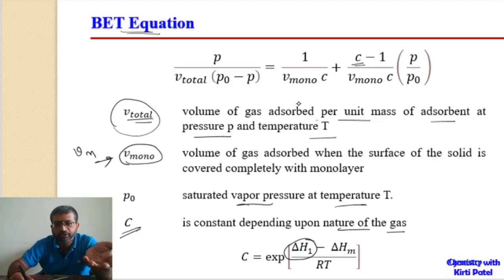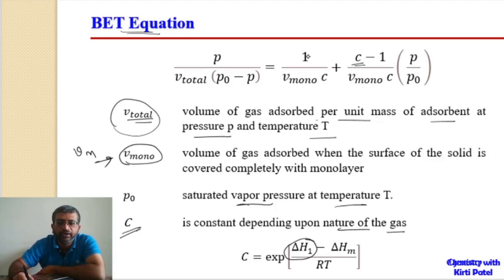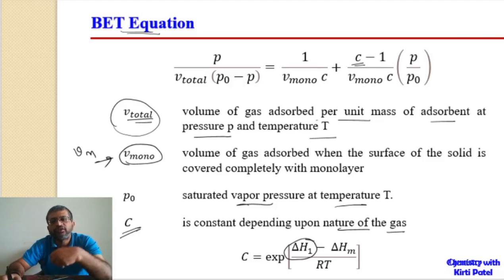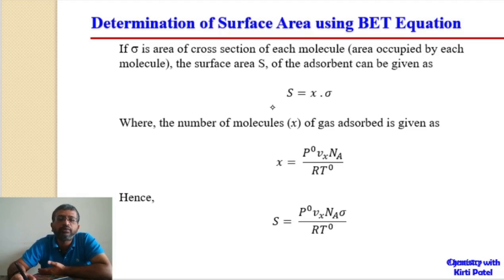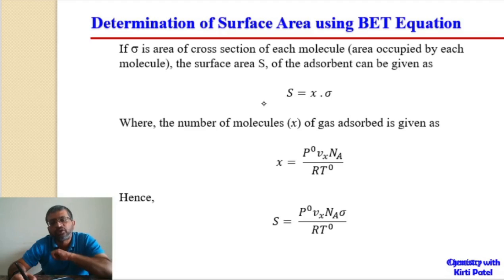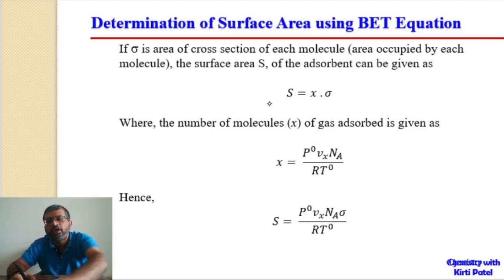When we plot P / (V_total × (P₀ − P)) versus P/P₀, it gives a straight line with slope (C − 1)/(Vm × C) and y-intercept 1/(Vm × C). The sum of slope and intercept gives us the value of Vm — the volume required for monolayer formation. Vm can be converted to STP conditions, from which we find the number of gas molecules required for monolayer formation, and hence the surface area.